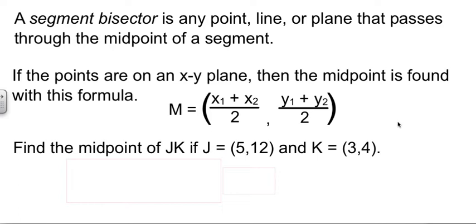And while we're talking about midpoints, we need to talk about the term segment bisector. It's anything that goes through the midpoint. It can be the midpoint itself, it can be a line, it can be a segment, it can be a plane. Anything that passes through that midpoint is a bisector.